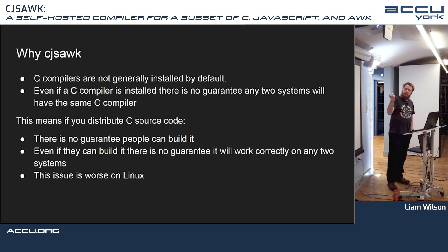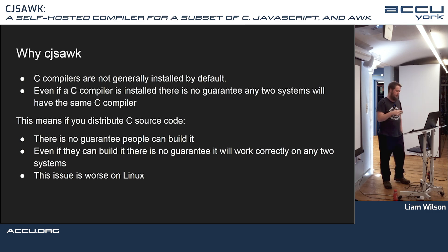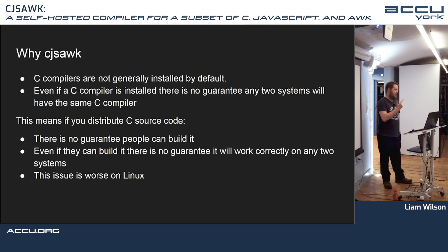So why bother? A C compiler is not generally installed by default. Even if a C compiler is installed, there's no guarantee that any two systems will have the same one. This means that if you distribute C source code, there's no guarantee people can build it — and even if they can, there's no guarantee it will work correctly. This issue is particularly bad on non-systems like Linux.